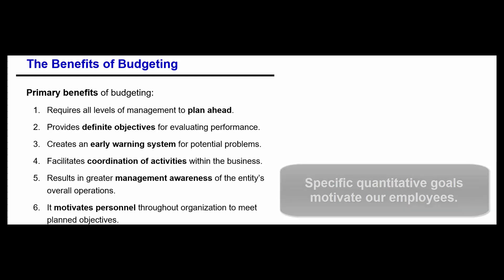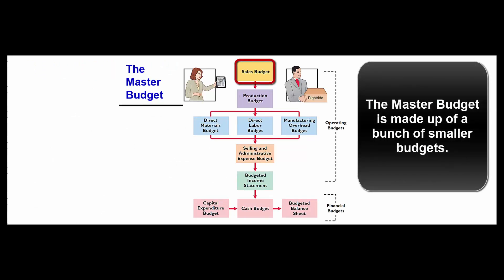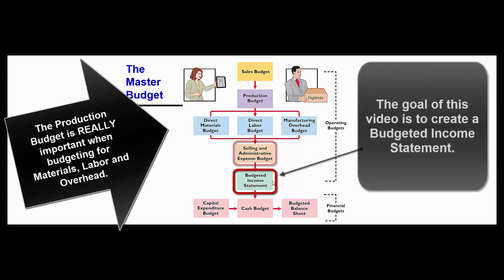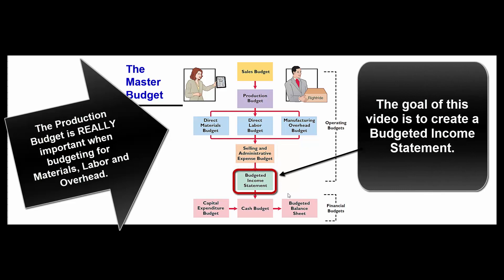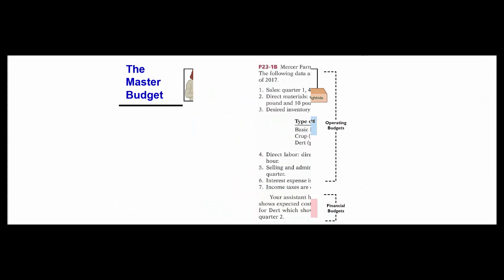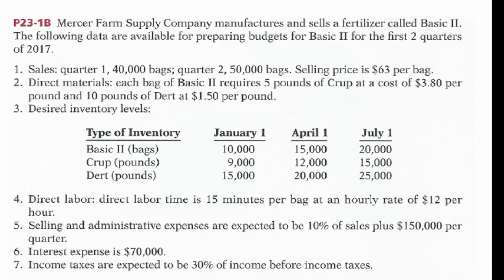The master budget is really made up of a bunch of smaller budgets. We'll start with sales, then create a production budget covering materials, labor, and overhead, then look at SG&A, and come up with a budgeted income statement — that's what we're going to do today. To get to the financial budgets — how much money we'll spend on new equipment, what our cash picture looks like, and what our balance sheet looks like — that's a much bigger project. Today we're just going to create a budgeted income statement.